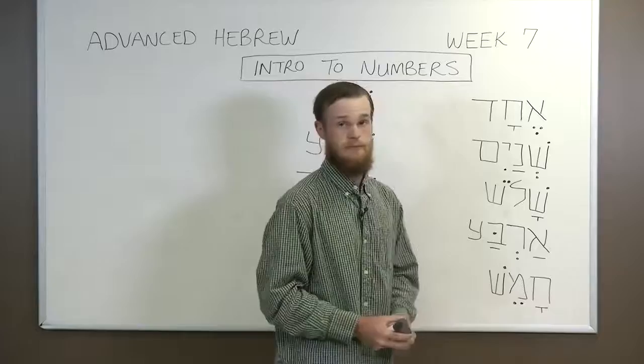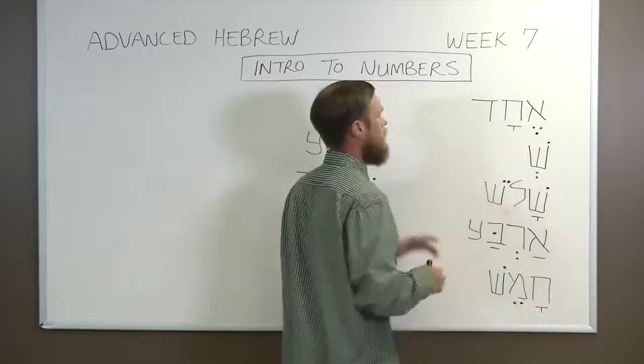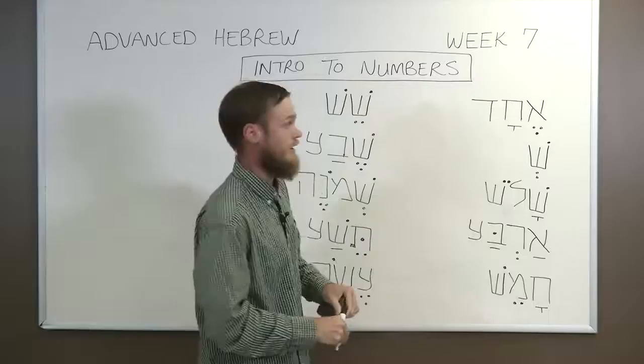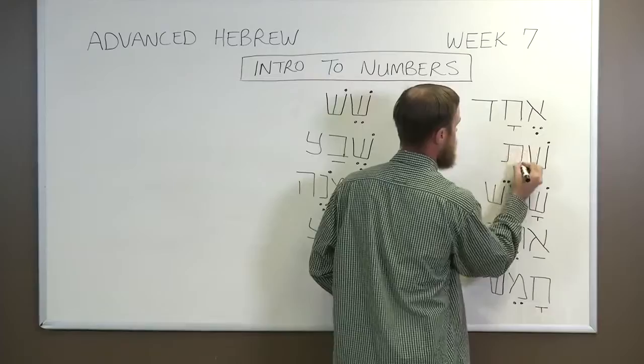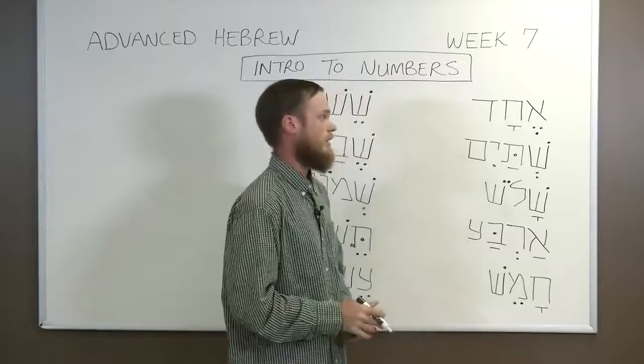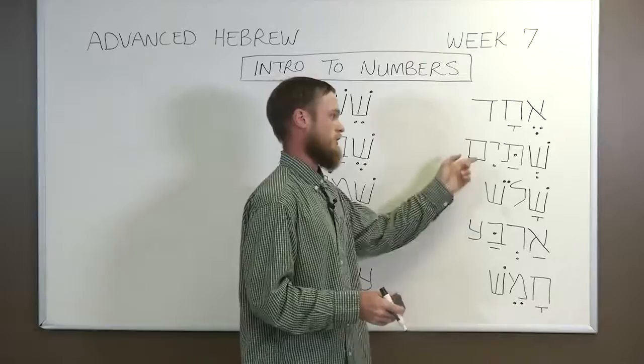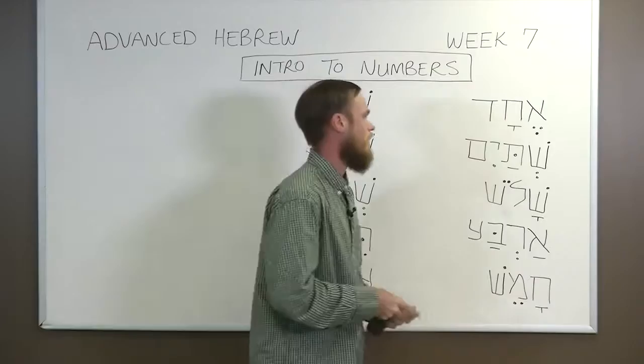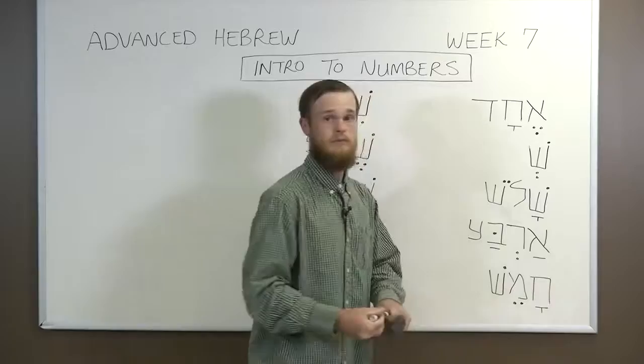The number for two is shenayim in the masculine. Two men would be anashim shenayim. Two women would be nashim — remember our irregular plural of isha is nashim — so nashim shenayim. Anashim shenayim, nashim shenayim. Shenayim is the feminine form of the number two. Pretty straightforward so far.